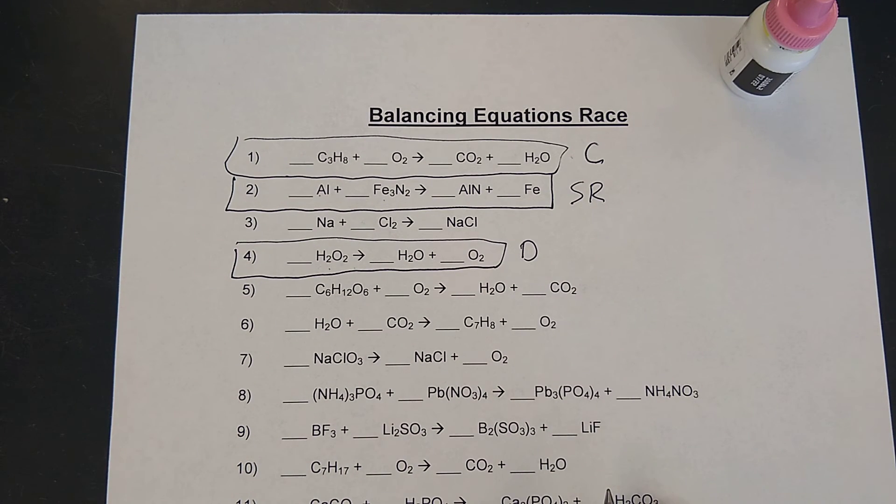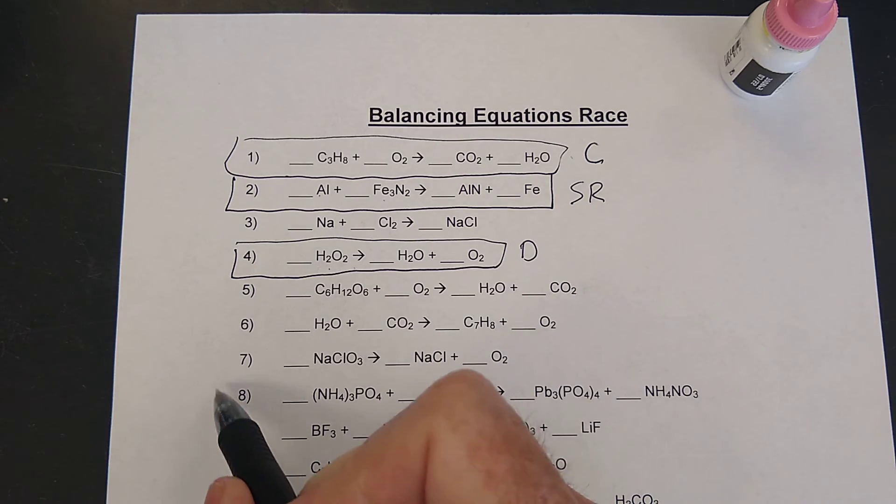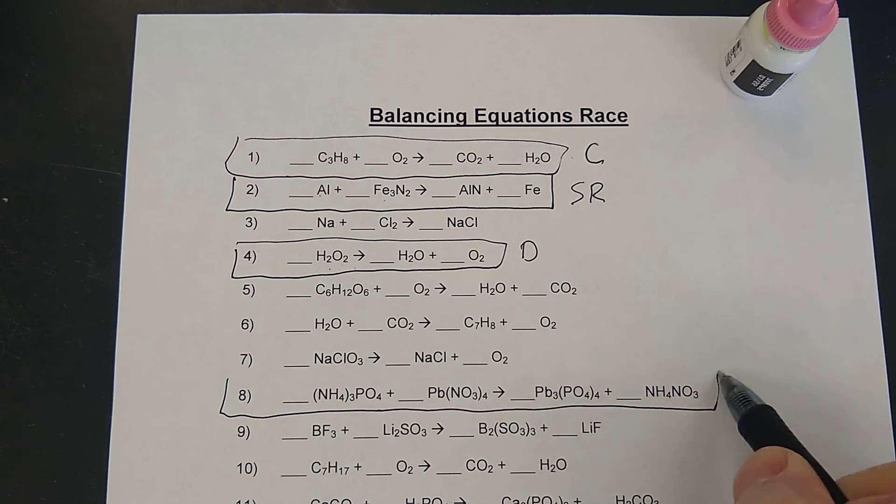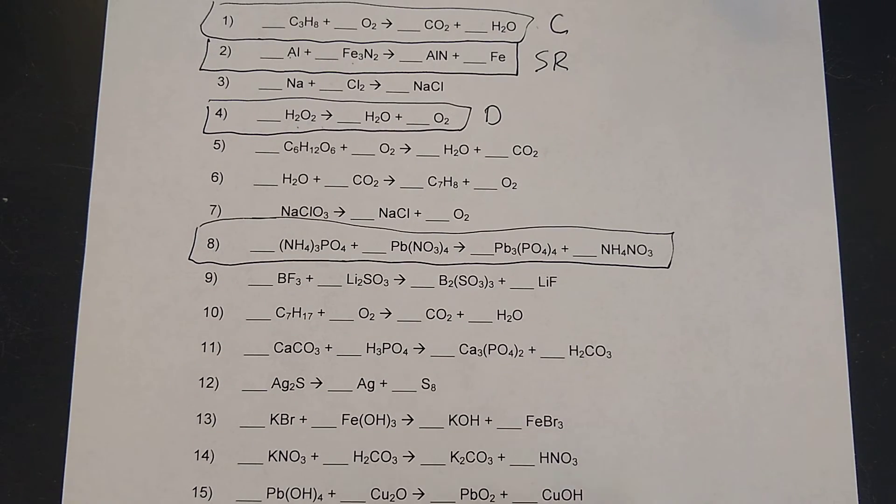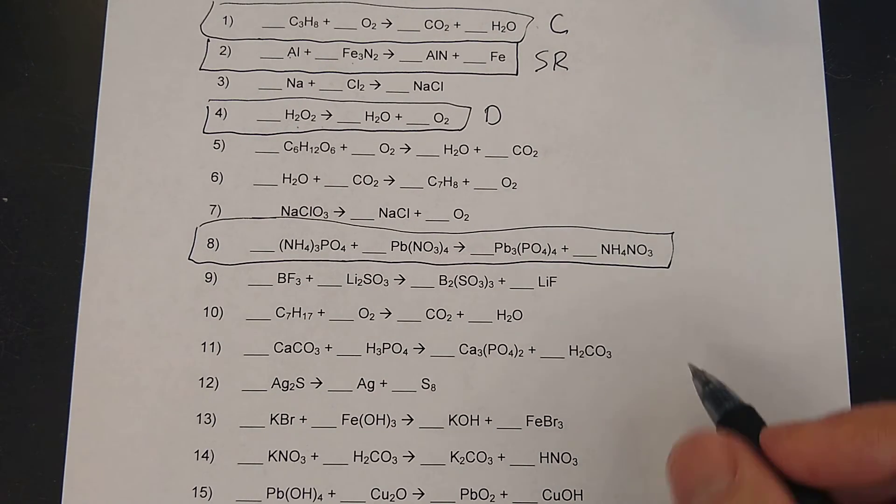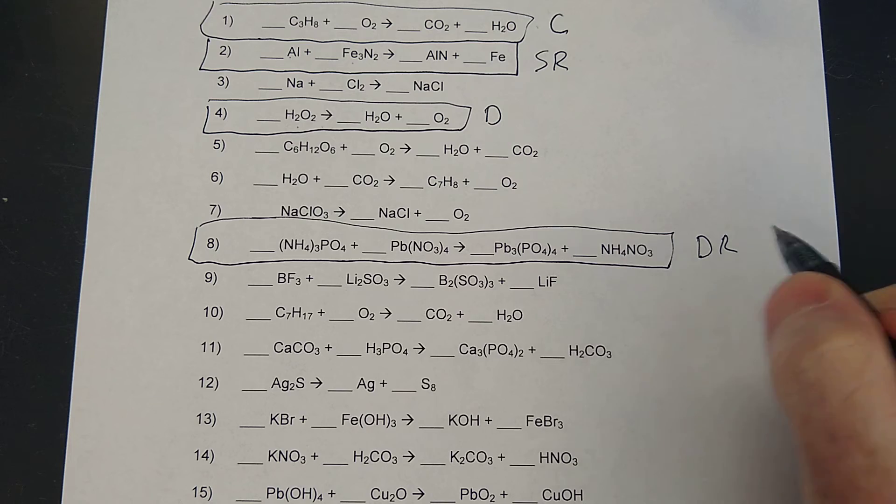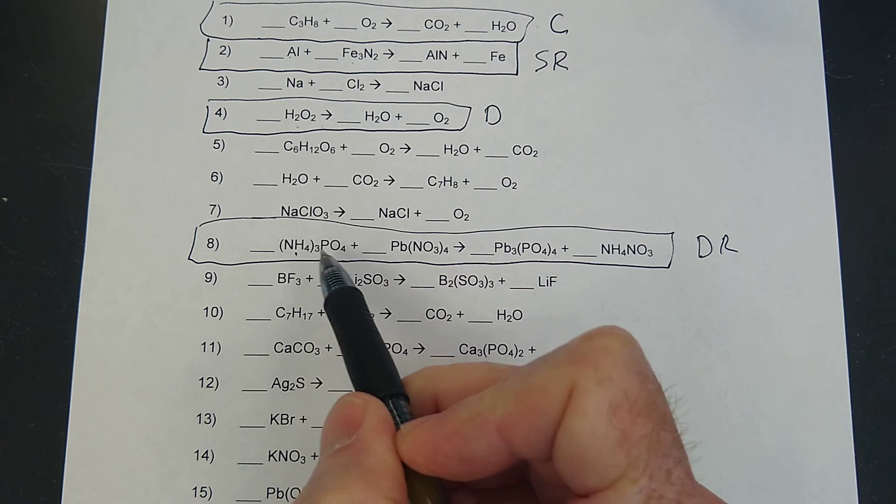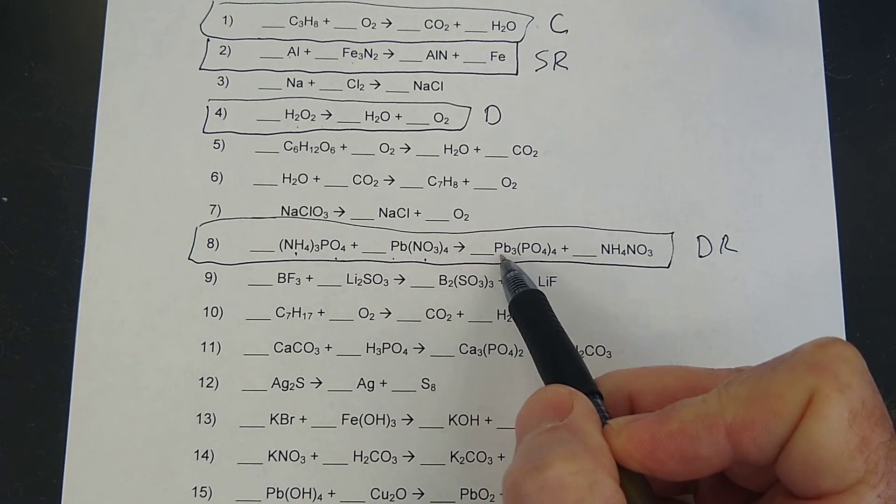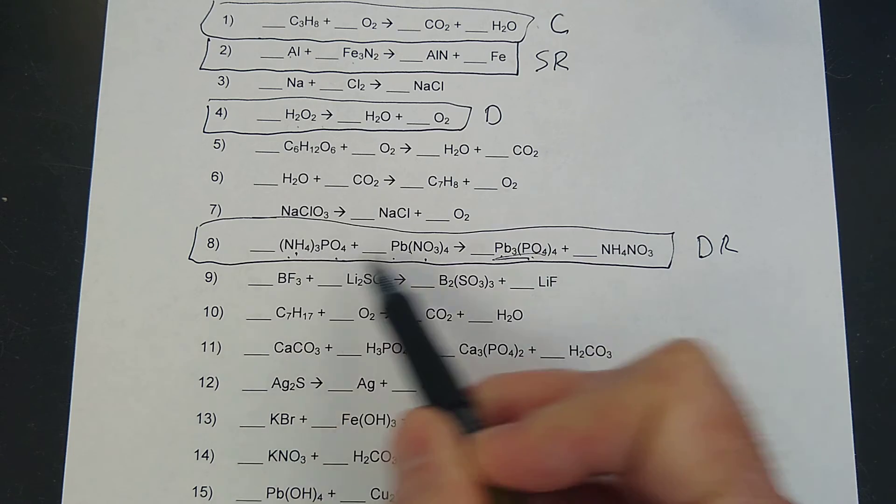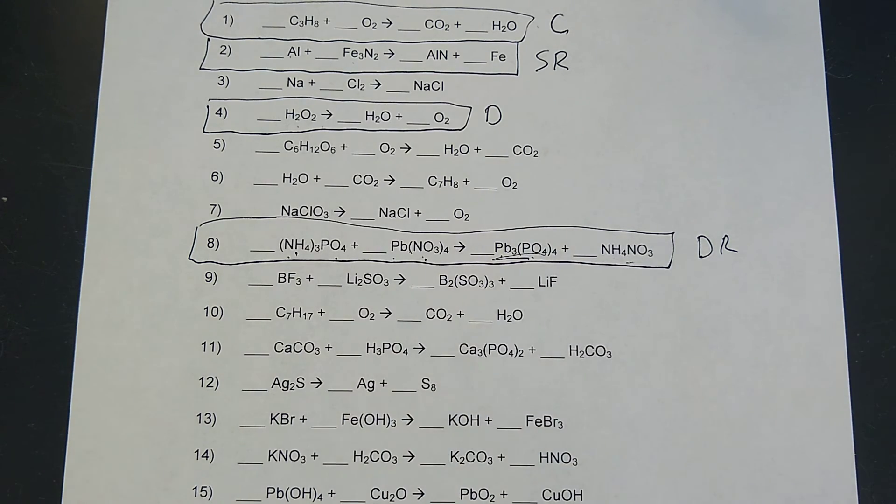How about number eight? What type of reaction would that be? Yeah, that'd be a double replacement. Because here you have ammonium and phosphate and lead and nitrate. And then over here, the lead is with the phosphate and the ammonium is with the nitrate. Double replacement.